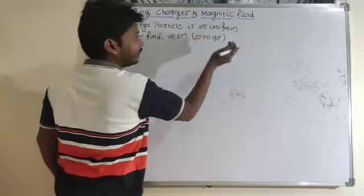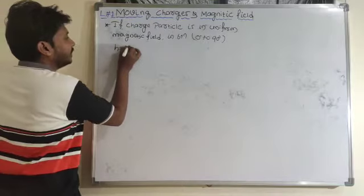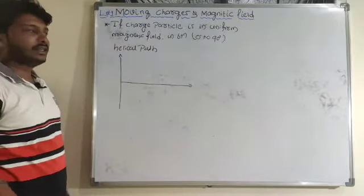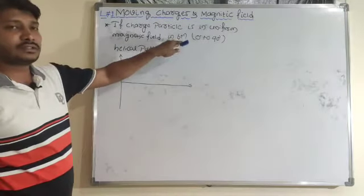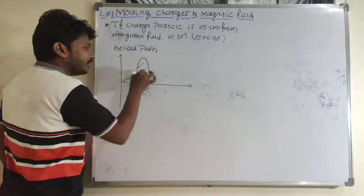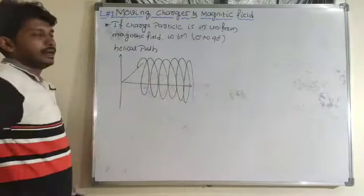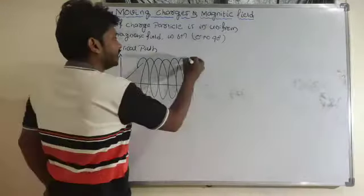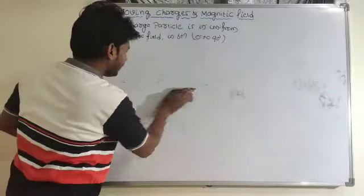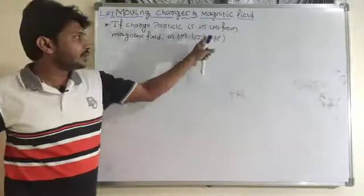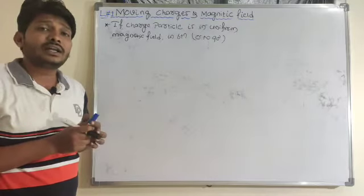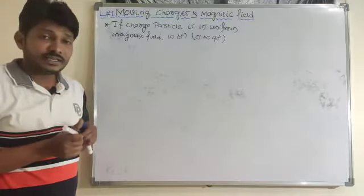If the charge particle is in a uniform magnetic field with the angle between 0° and 90° — not equal to 0° and not equal to 90° — then the trajectory is a helical path. For example, if the charge particle is moving in a uniform magnetic field between 0° to 90°, it will follow a helical path. Now, in order to accelerate the charge particle, we use the device called the cyclotron.